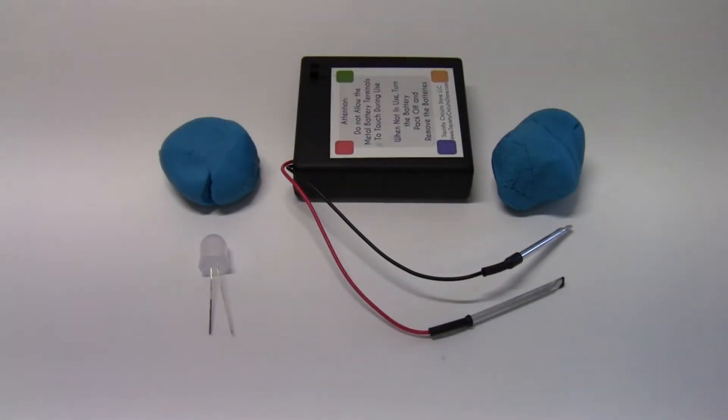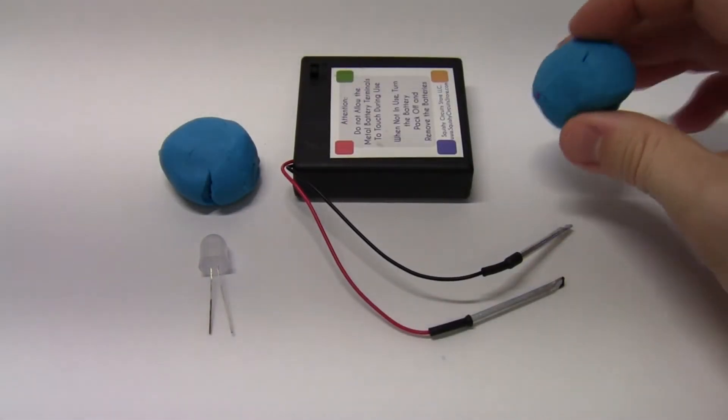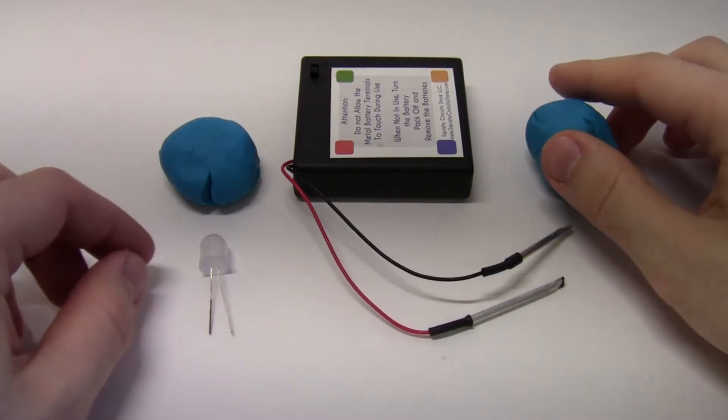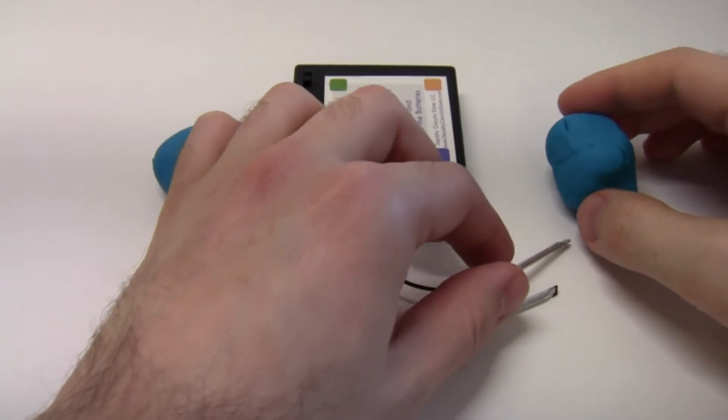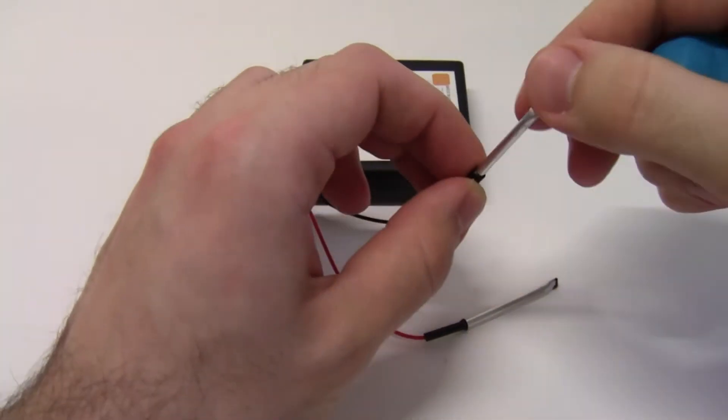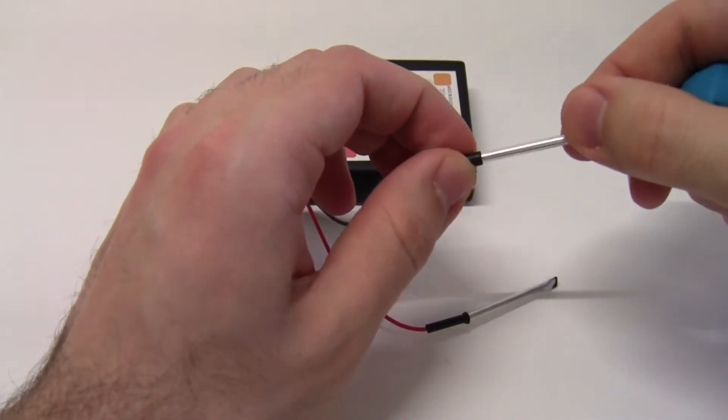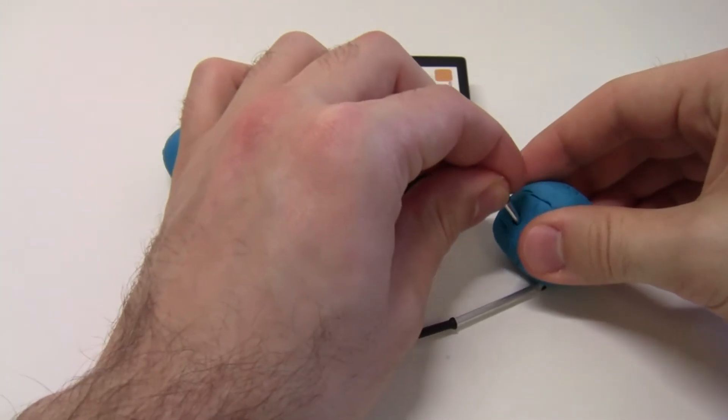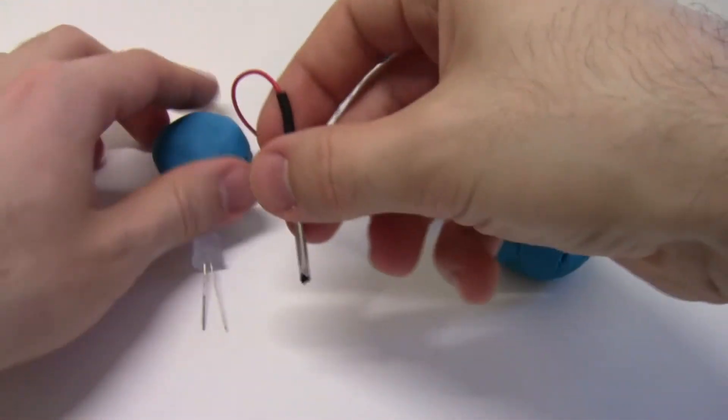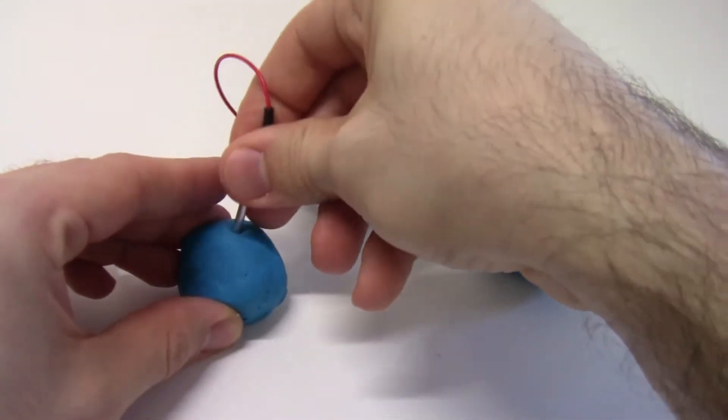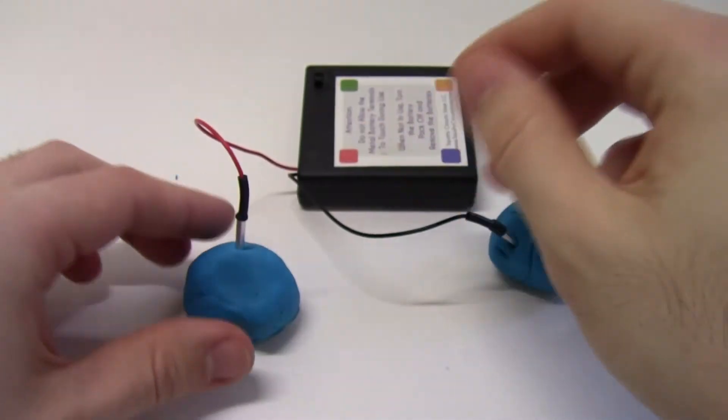For your very first squishy circuit, all you're going to need is two lumps of Play-Doh or your homemade conductive dough, an LED, and the battery pack. Take the metal terminals attached to the wires on the battery pack and press one of them into each lump of Play-Doh. So here I have the red wire and the black wire, and I've separately pressed one of the metal leads into each lump of the Play-Doh.